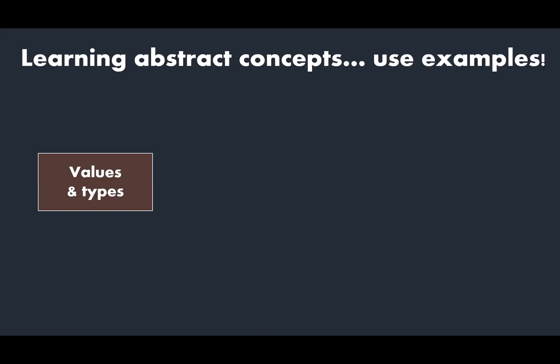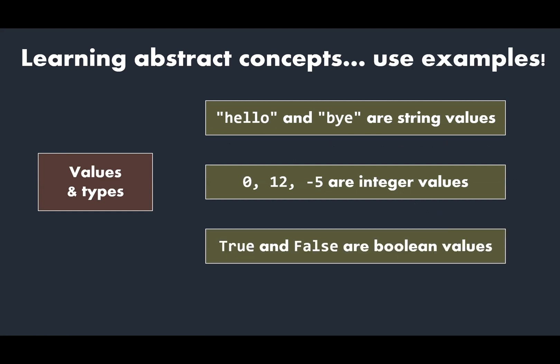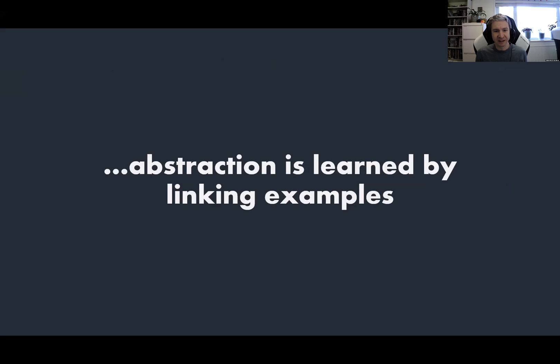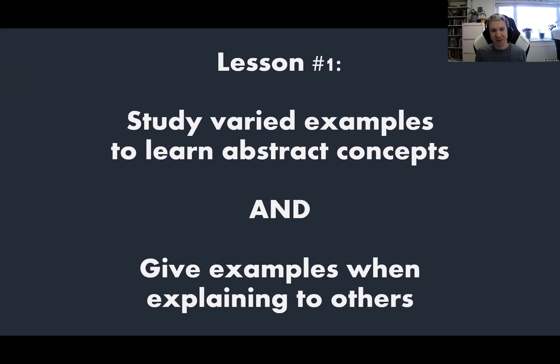What works better is if we use examples. If you learn instead that hello and bye are string values, 0, 12, minus 5 are integer values, and true and false are Boolean values, then once you've learned these facts, your brain can then start linking them together to say, oh, these are different kinds of values, they have different types. And this way you can actually start to get a handle on the abstract concepts. So abstraction is learned by linking these examples together. That's the best way for your brain to learn it. Our first lesson is that you should study varied examples if you want to learn abstract concepts. And if you're having to explain this to somebody else, perhaps to a junior developer, you should use examples when explaining because that's going to be easier for them to learn the idea of the abstraction.